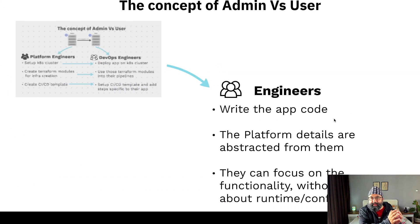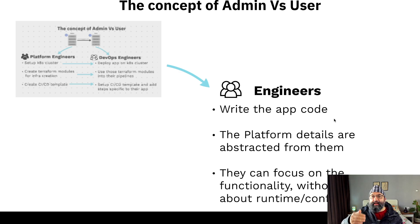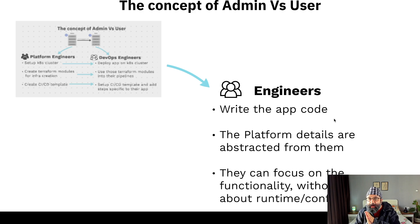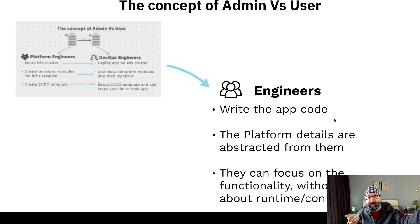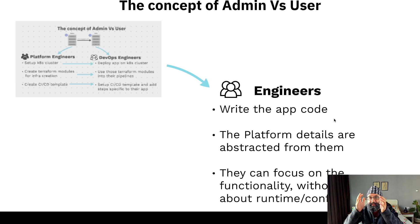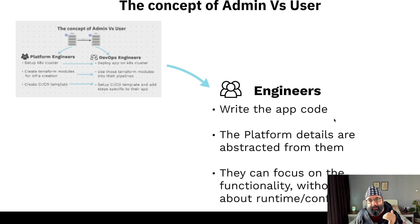Extending this further: once the platform is ready and configured for a pipeline, the application engineers write code with platform details abstracted away. They don't worry about how much RAM they need, where their secrets are, where clusters are located, or where pods are running. All of that is abstracted by platform engineers and implemented by DevOps engineers. Engineers just focus on writing code and functionality without worrying about the underlying runtime or configuration.